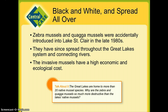In the 'Talk About It' section, the Great Lakes are home to more than 20 native mussel species. What we examine in this central case study is why the zebra and quagga mussels are so much more destructive than the lake's native mussel species. Read over that as the introduction chapter opener.